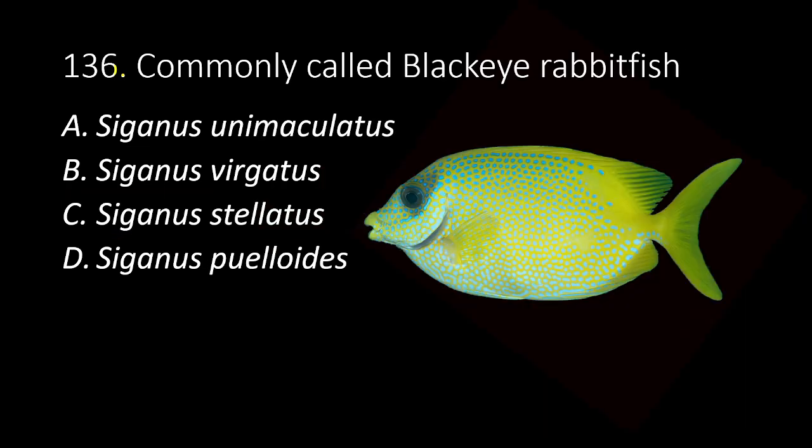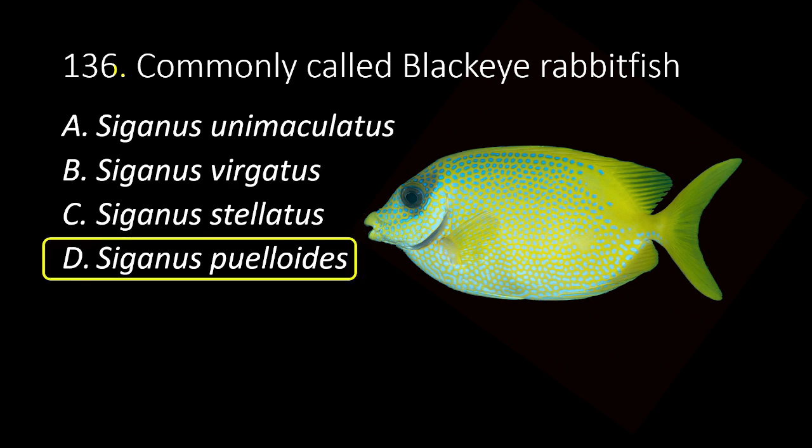136. Commonly called black-eye rabbit fish. A. Siganus unimaculatus. B. Siganus virgatus. C. Siganus stellatus. D. Siganus veloides. The answer is D, Siganus veloides.